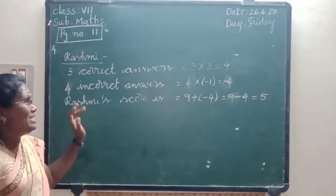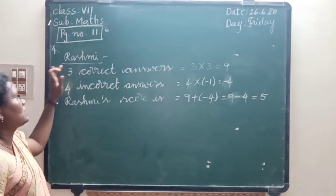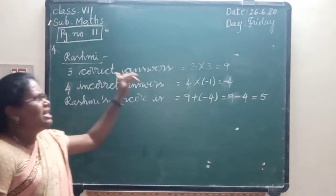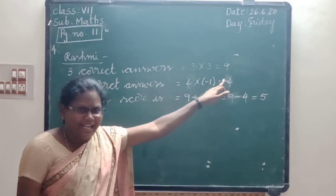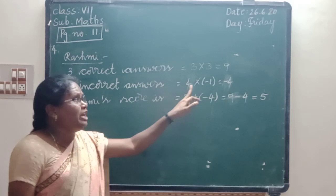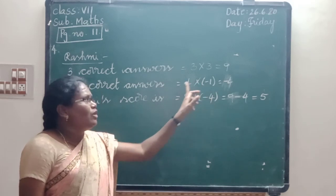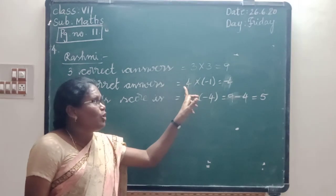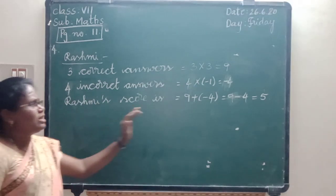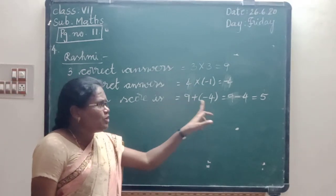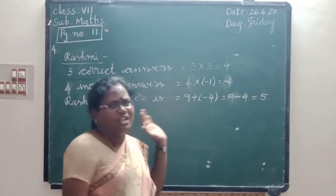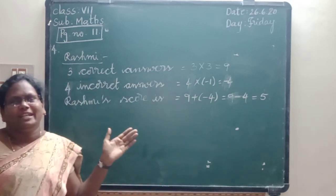Once again: Rashmi attempted 3 correct answers, so 3 into 3 equals 9. She attempted 4 incorrect answers: 4 into minus 1 equals minus 4. The product of a positive and negative integer is a negative integer. Rashmi's score is 9 plus minus 4, which equals 9 minus 4, equal to 5. This is very, very, very important. You will practice at home.